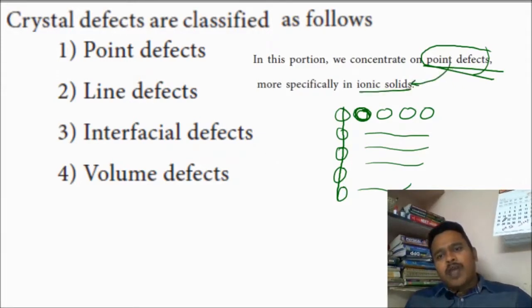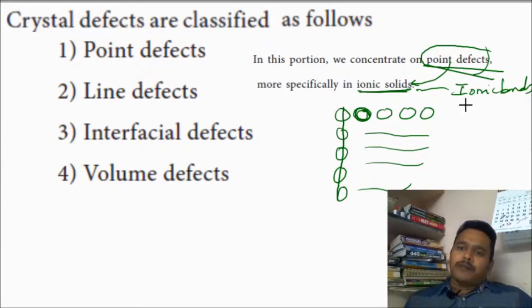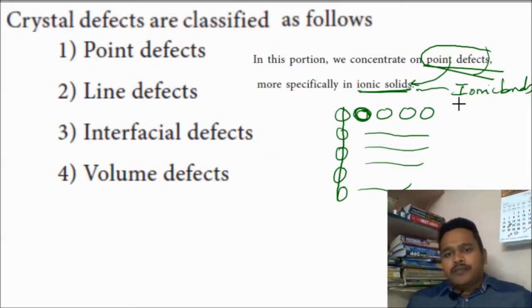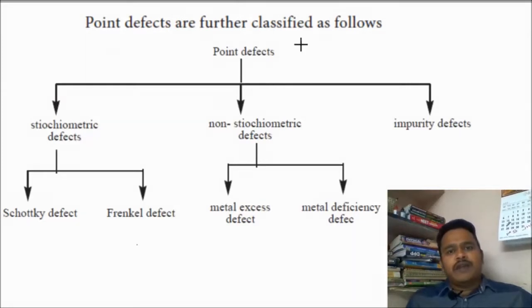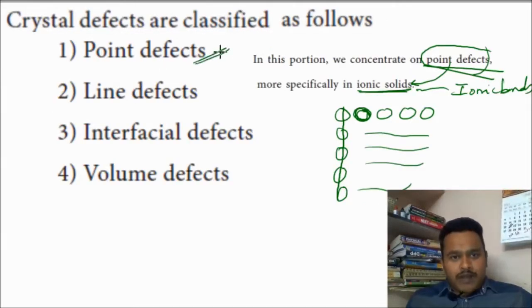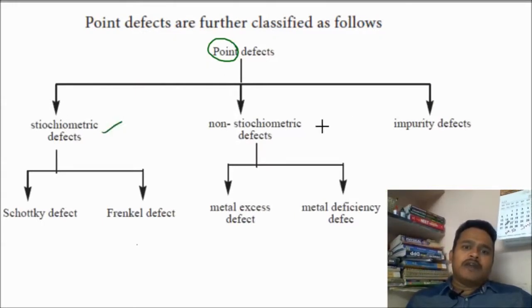Point defect is mainly going to occur in ionic solids. Ionic solids means which are formed by the ionic bond — already we studied ionic bonds, covalent bonds, metallic bonds, and molecular solids with van der Waals forces. All these four types of solids we studied at the beginning of the lesson. So now this point defect we can observe in ionic solids. Again, this point defect is further classified into stoichiometric defects, non-stoichiometric defects, and impurity defects.